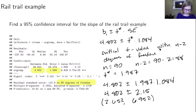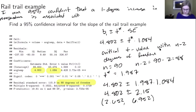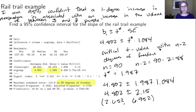Let's interpret that interval. I am 95% confident that a one-degree increase in temperature is associated with an increase in the volume of between—rounding 2.652 to about three people and 6.952 to about seven people—between three and seven people on the rail trail. So a 95% confidence interval for the slope means we're 95% confident that a one-degree increase in temperature is associated with an increase of between three and seven people on the rail trail.